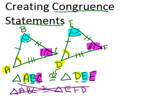That's wrong because the letters don't match up. So anytime you make a congruent statement you have to make sure that the letters match up so that the corresponding angles are in the right order.